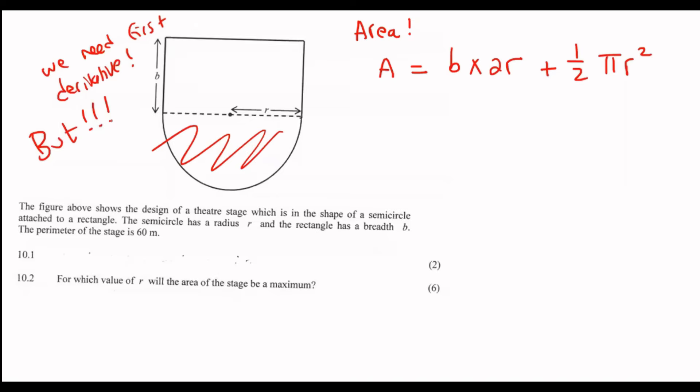But we have a problem. We cannot take the first derivative of this. Why? How many different variables do we have? We have two variables - we've got B and we've got R. So what do we need to do? We need to replace one of them.